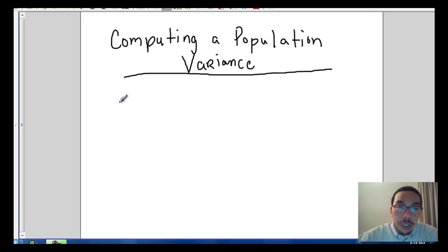Okay, in this mini lecture we'll compute a population variance. So let's recall the formulas for population variance. This should be sigma squared equals the sum of x sub i minus mu squared all over capital N.